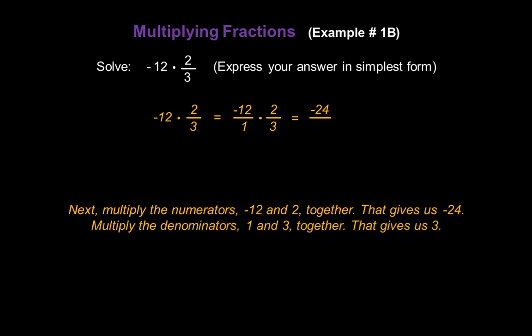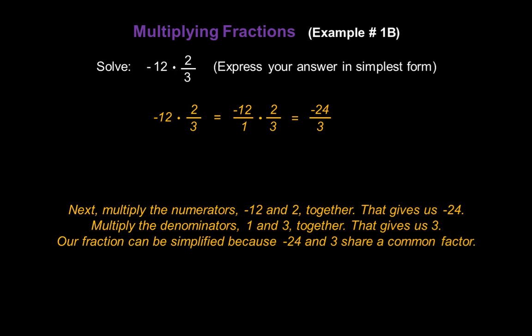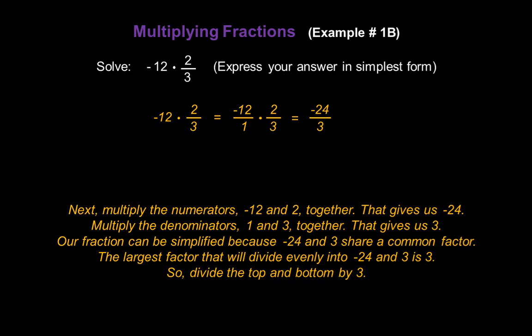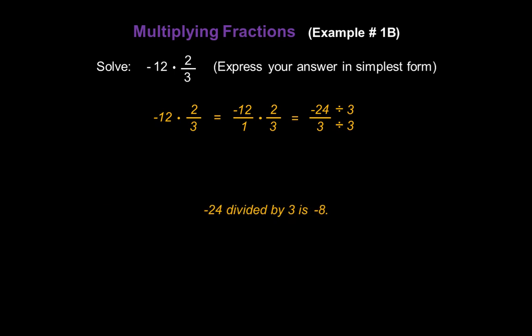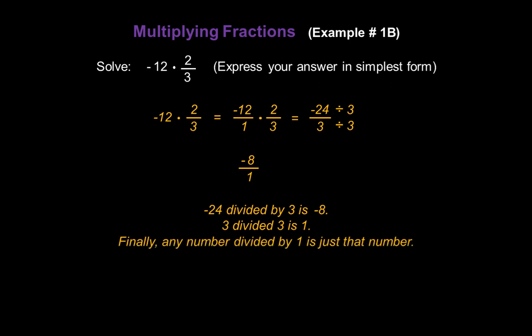Multiply the denominators 1 and 3 together to give us 3 in the denominator. Our fraction can be simplified because negative 24 and 3 share a common factor of 3. Divide the numerator by 3 and the denominator by 3. Negative 24 divided by 3 is negative 8, and 3 divided by 3 is 1. Any number divided by 1 is just that number, so our answer is negative 8.